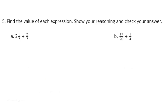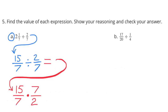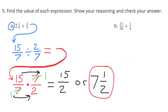Problem 5 — Find the value of each expression. Show your reasoning and check your answer. Part A: 2 1/7 divided by 2/7. 2 1/7 can be written as 15/7. 15/7 divided by 2/7 can be answered by multiplying by the reciprocal of 2/7: 15/7 × 7/2 equals 15/2, or 7 1/2.